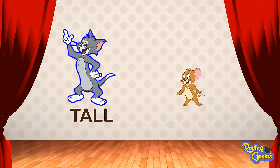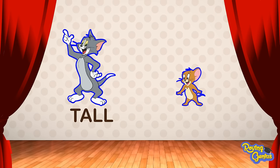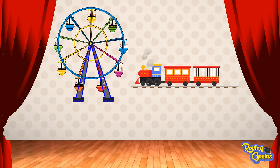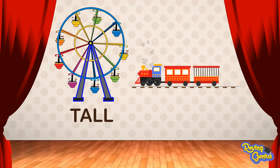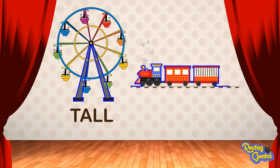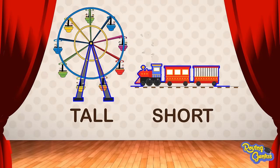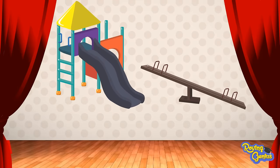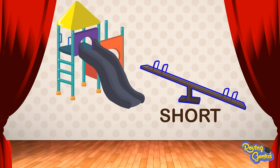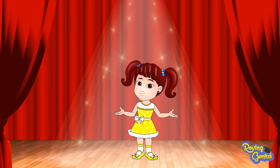Jerry is short. This giant is tall, while this toy train is short. This is a tall slide, while this is a short see-saw. Hope you had fun — try comparing a few objects around you!